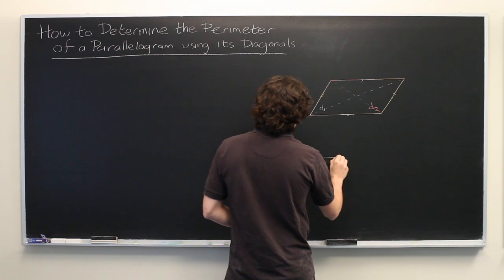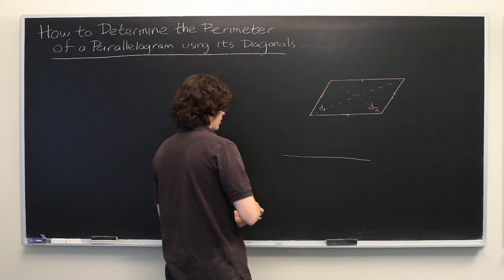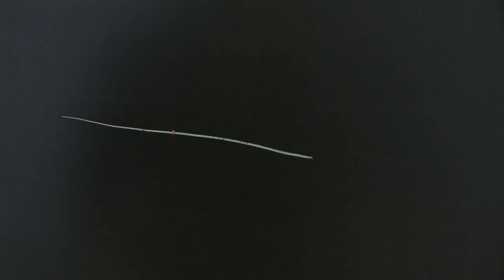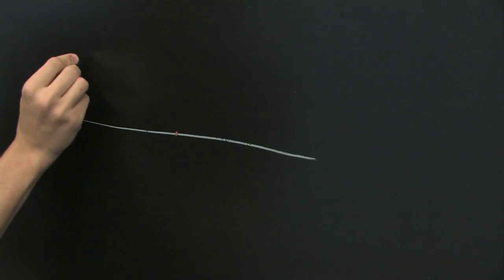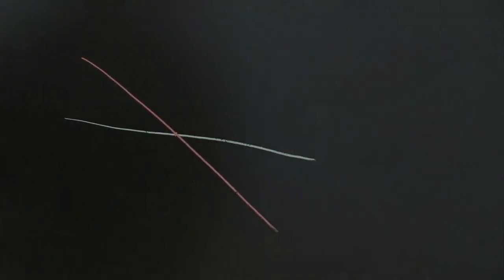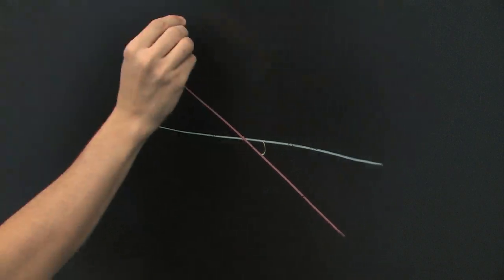Say we have diagonal 1. Here's the center of some hypothetical shape. Here we have diagonal 2 where this is one angle. But here's diagonal 2 again.